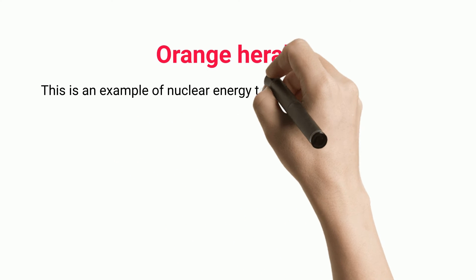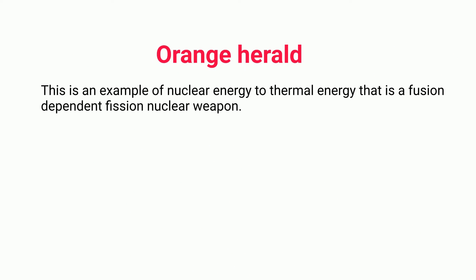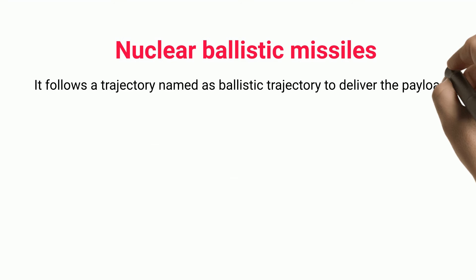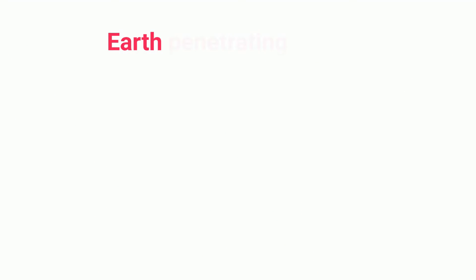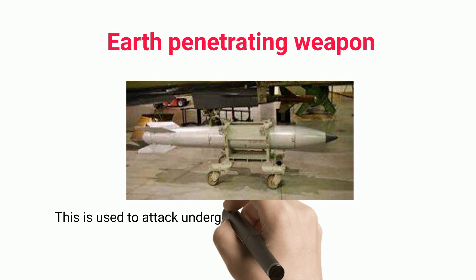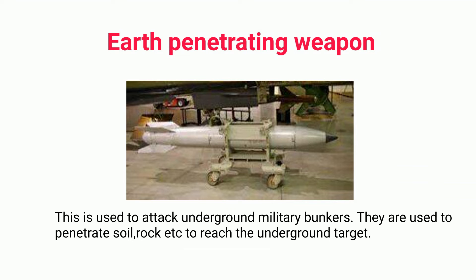Orange Herald is an example of nuclear energy to thermal energy conversion — it is a fusion-dependent fission nuclear weapon. Nuclear ballistic missiles follow a trajectory called a ballistic trajectory to deliver the payload to the target. Earth-penetrating weapons are used to attack underground military bunkers, penetrating soil, rock, and similar materials to reach the underground target.